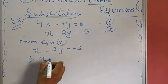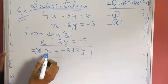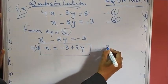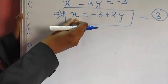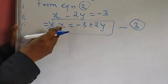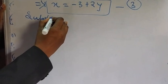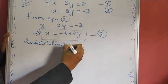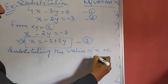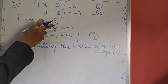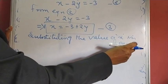This implies X is equal to minus 3 plus 2Y. We have now got a specific expression for X, so let us call this equation 3. Whatever value we have got in equation 3 for X, we are going to substitute it into the other equation. Since I took equation 2, I am going to put the value of X into equation 1.